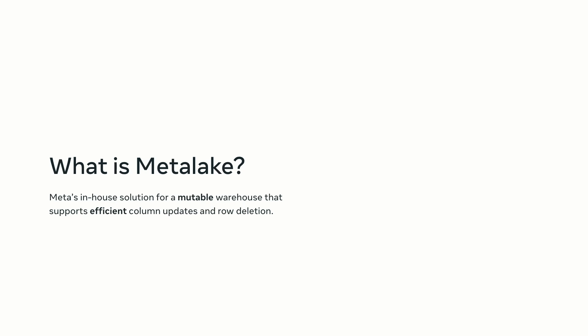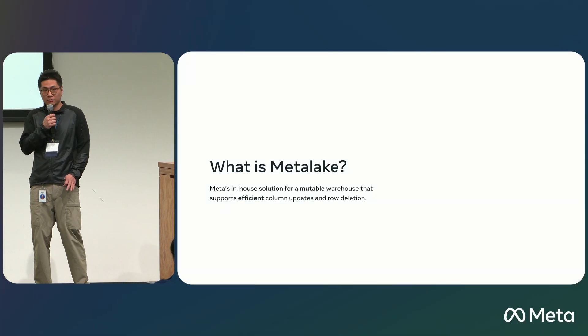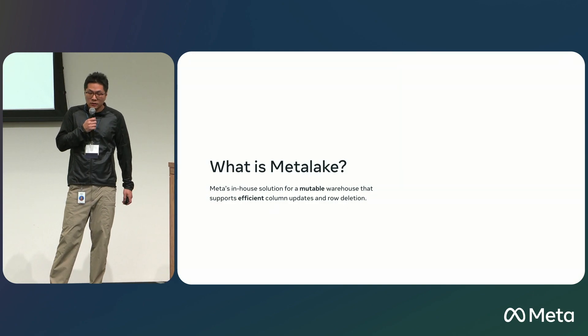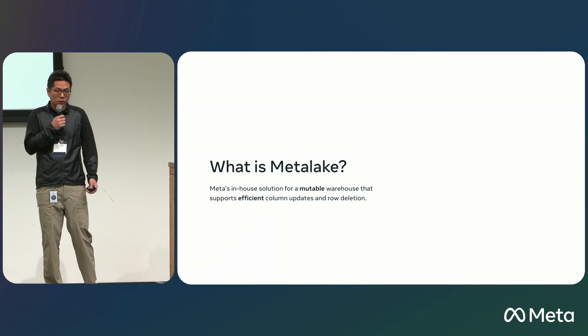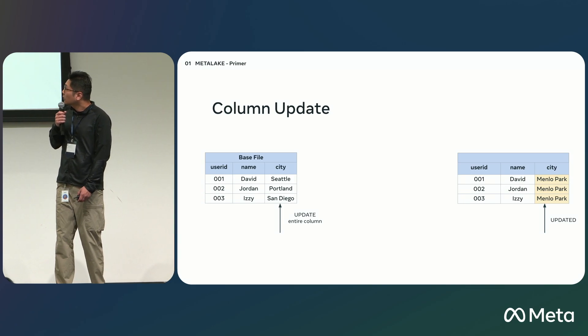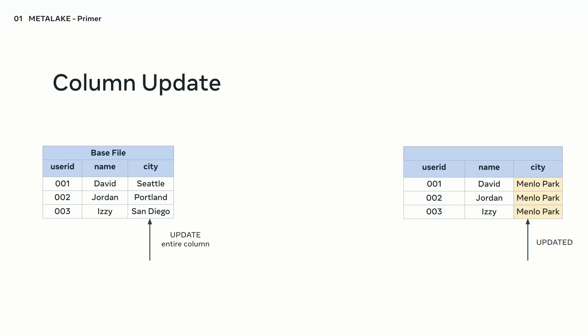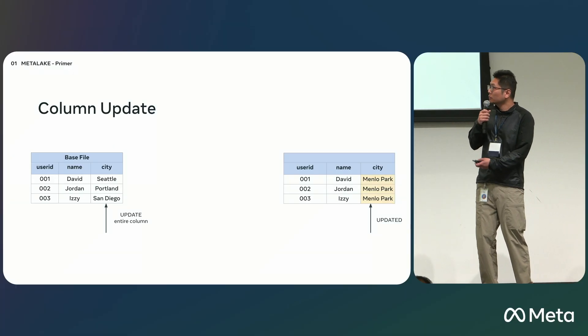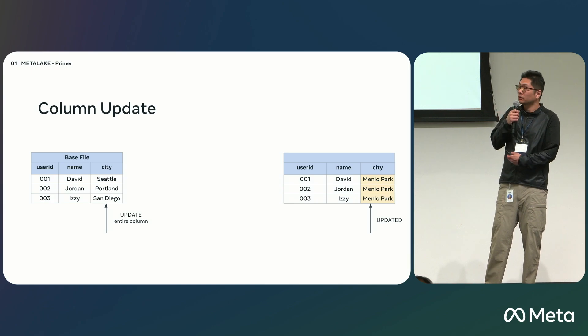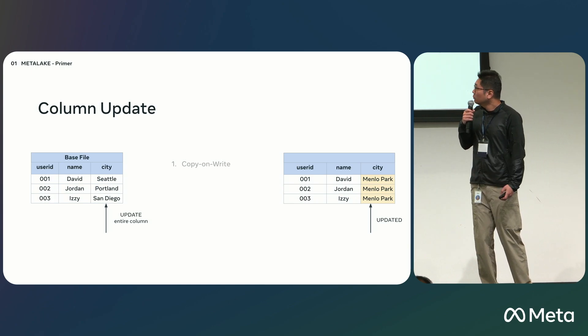MetaLake is an in-house solution for mutability in the warehouse. It supports super-efficient column updates and row deletion, and is transactional with full data mutation support. Let's walk through a quick example of how column update works. Think about a table with three rows where you want to update the entire city column to a constant value, Meadow Park. In a traditional MySQL database, you'd just run an update query — very simple. But in the immutable warehouse, what's the common way of doing that?